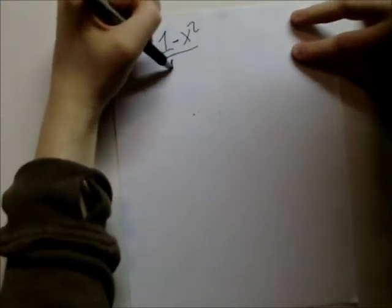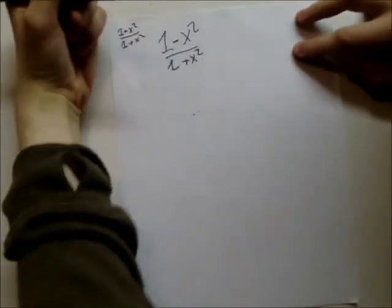1 made of x squared, 1 plus x squared. So basically,